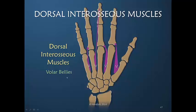Remember, there are four dorsal interosseous muscles, and three of them usually — though it's highly variable — insert into bone. For some reason, the long finger often has on the ulnar side an insertion into the dorsal apparatus. We are not talking about the volar interosseous muscles, just the volar belly of the dorsal interosseous muscles. That one belly has some influence into the dorsal apparatus and thus the fibers, both transverse and oblique.